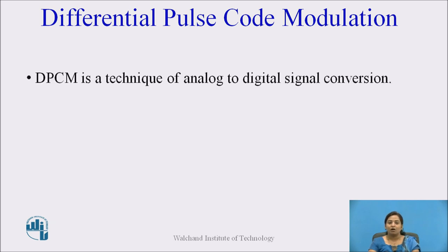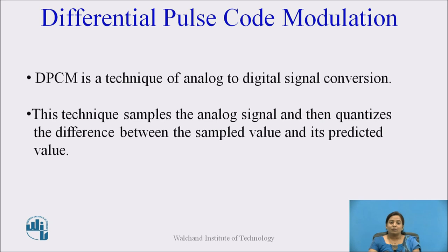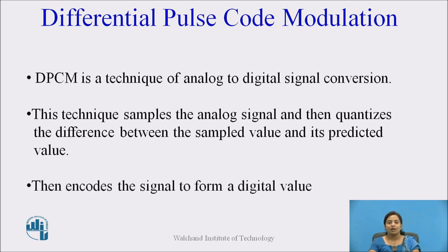DPCM is a technique of analog to digital signal conversion. DPCM works on the principle of prediction — the present sample is predicted using the value of the past sample. This prediction may not be exact, but it is nearly close to the actual sample value. The basic steps in DPCM are: first the analog signal is sampled, then the difference between the sampled signal and the predicted value is quantized, and that quantized signal is encoded.